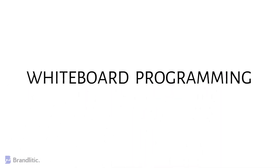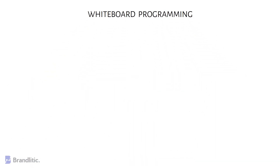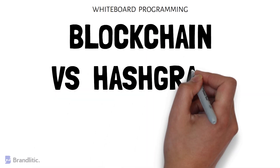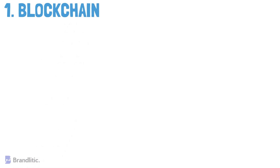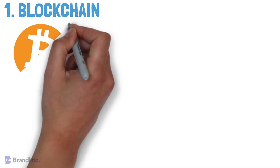Welcome to White Paper Programming, where we simplify programming with easy-to-understand whiteboard videos. Today I'll be sharing with you the types of distributed ledger technologies, along with a detailed comparison between blockchain, hashgraph, directed acyclic graphs or DAG, and holochain. So let's get started.